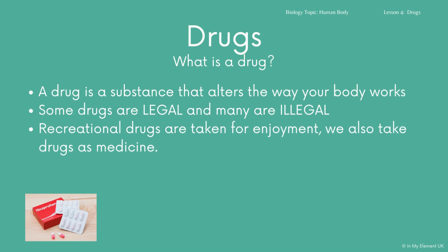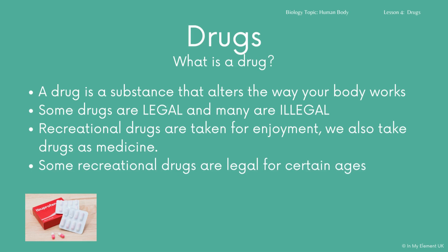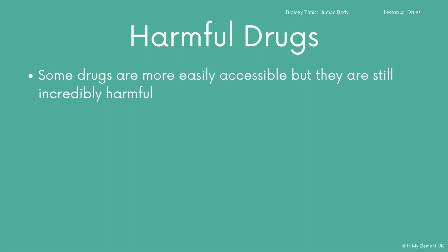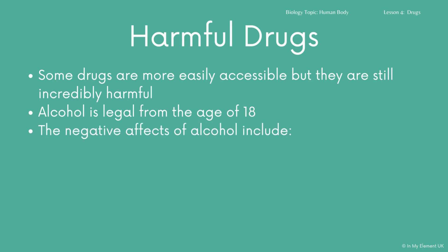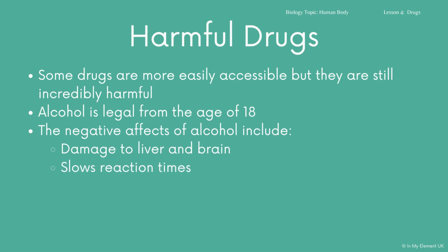Recreational drugs are those that are taken for enjoyment. There are also drugs like paracetamol and ibuprofen that we take as medicine. There are also recreational drugs that are legal for certain ages — you can think of alcohol as this. Many of these drugs are harmful. Alcohol is a good example: it's legal from the age of 18, but extremely addictive and can be very damaging. The negative effects include damage to the liver and the brain, and it also slows down reaction times. It's classed as a depressant and is very addictive.